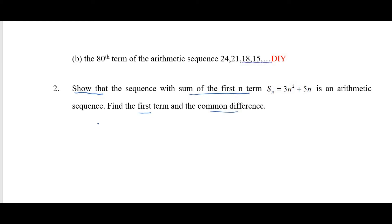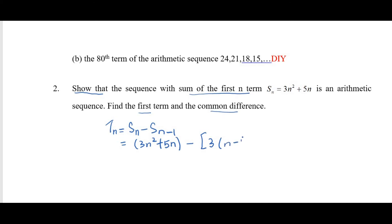To find the nth term tn, recall from lecture that tn = Sn − S(n−1). Substituting, Sn = 3n² + 5n, and for S(n−1) we replace n with (n−1), giving 3(n−1)² + 5(n−1).